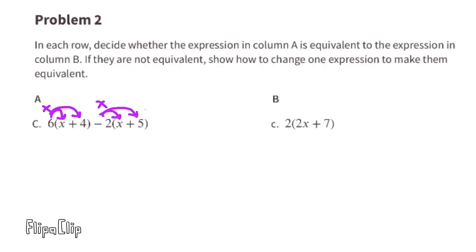C. 6 times x is 6x. 6 times a positive 4 is positive 24. Negative 2 times x is negative 2x, and negative 2 times positive 5 is negative 10. 6x minus 2x is 4x, and 24 minus 10 is 14.